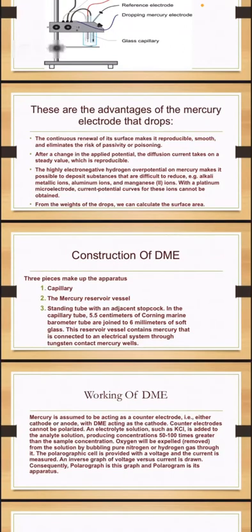To construct the DME, three pieces make up the apparatus: first, the capillary; second, the mercury reservoir vessel; and third, a standing tube with an adjustment stopcock. In the capillary tube, 5.5 centimeters of Corning marine perimeter tubes are joined to 6 millimeters of soft glass.